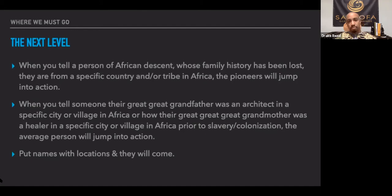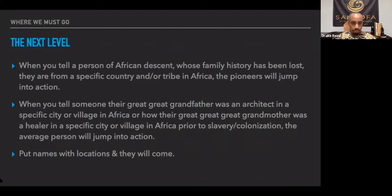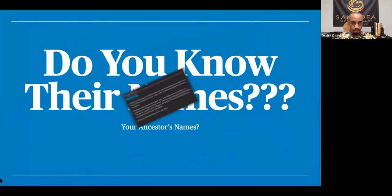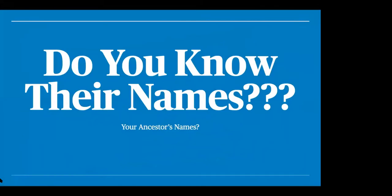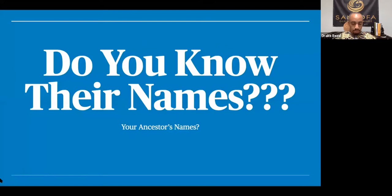If you have a person of African descent whose family history has been lost — they are from a specific country and tribe in Africa — the pioneers will jump into action. When you tell someone that their great-great-grandmother was an architect in a specific city or village in Africa, or that their great-great-great-grandmother was a healer in a specific city or village prior to slavery and colonization, the average person will jump into action. Put the names with locations, and they will come. It's so important to know your ancestors' names — not just the names, but who they are, what they did, how they affect your life, and why you're here.